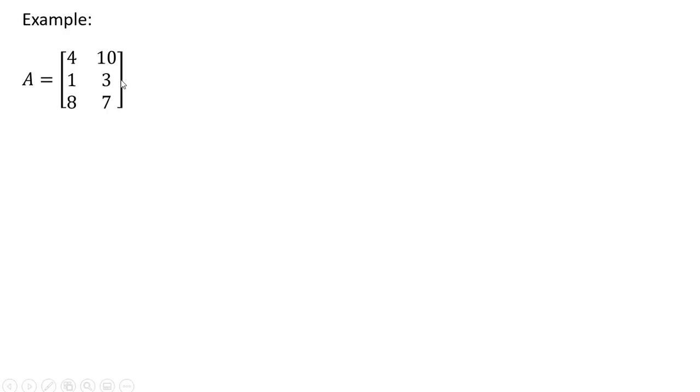Some more examples. Here we have matrix A. It is a 3 by 2 matrix, 3 rows, 2 columns. The transpose of it will look like this. The first row, 4 and 10, becomes the first column. The second row, 1 and 3, becomes the second column of the transpose matrix. The third row, 8 and 7, becomes the third column of the transpose matrix.